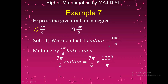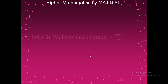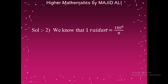Example 7: Convert 7π/6 radians to degrees. Using the relation 1 radian equals 180°/π, multiplying both sides by 7π/6: (7π/6) × (180/π). Cancelling π with π and 180 with 6 (since 6 × 30 = 180), we get 7 × 30 = 210 degrees. Therefore, 7π/6 radians equals 210 degrees.